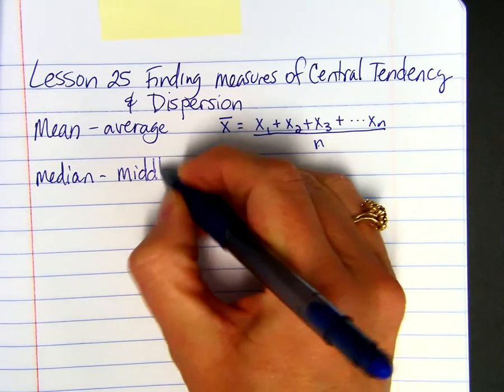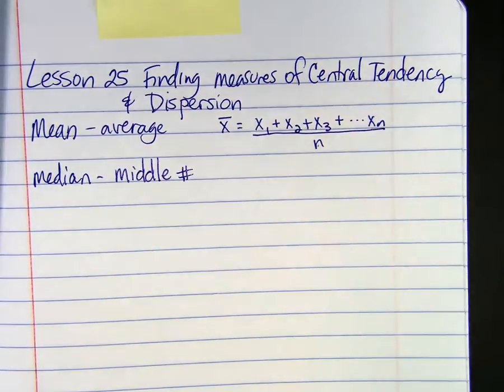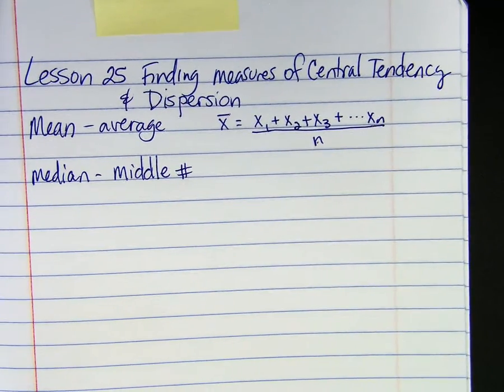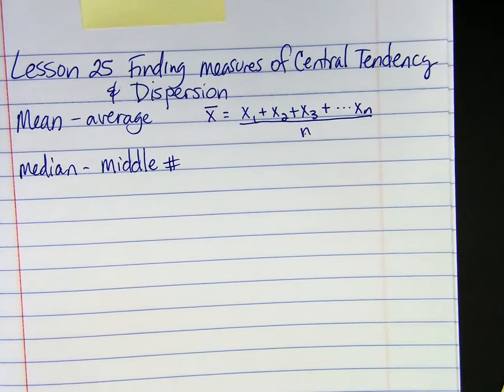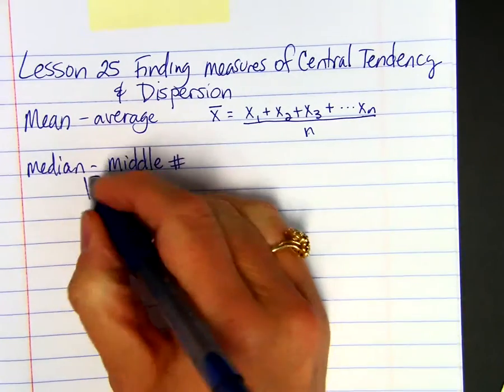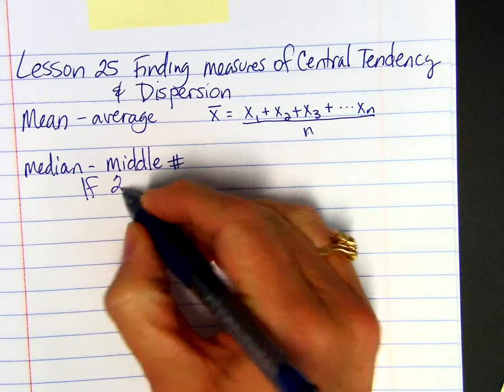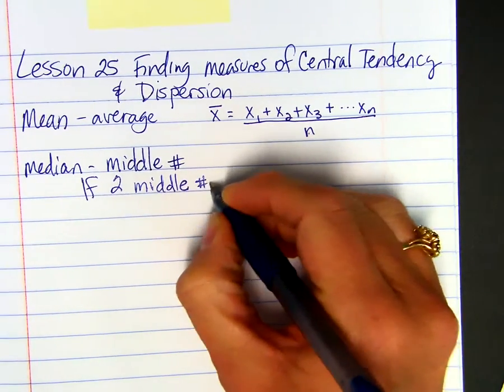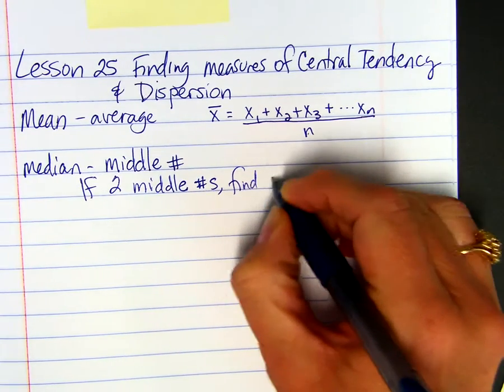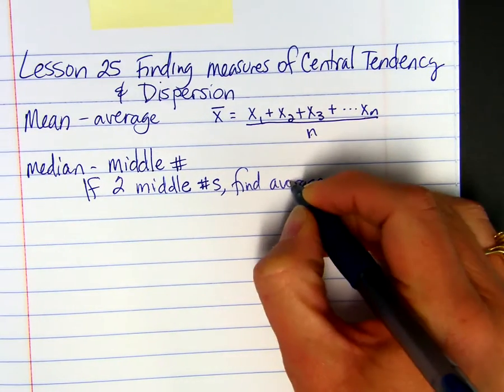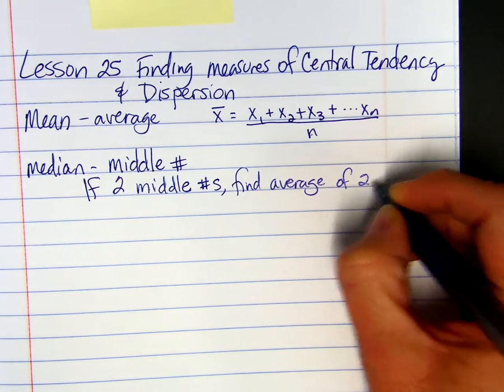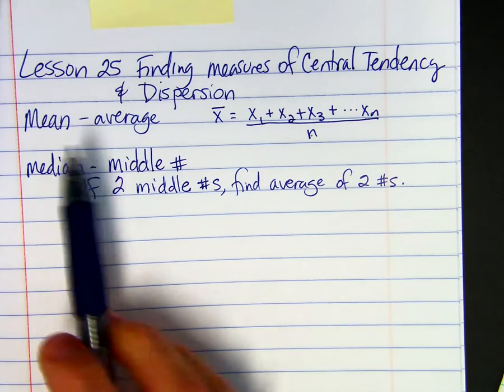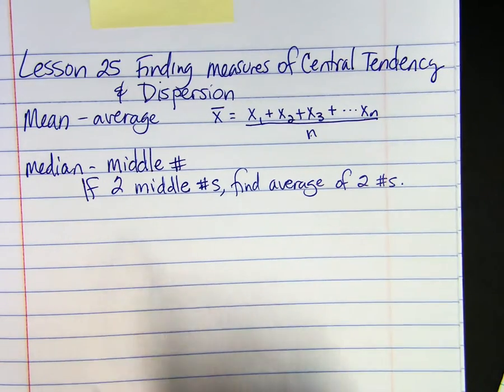The median is the middle number when the numbers are arranged in order. It doesn't have to be least to greatest, it can be greatest to least. If you happen to have two middle numbers because there's an even number of numbers, then you will find the average or the mean of those two middle numbers. So the mean and the median, there's only one.